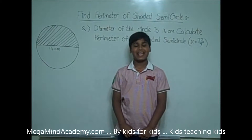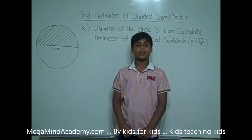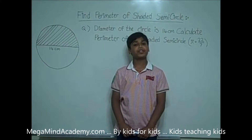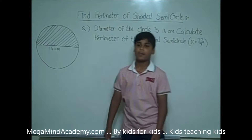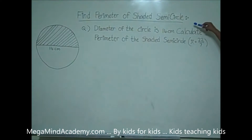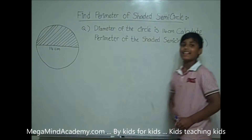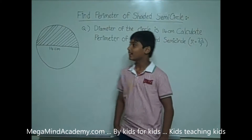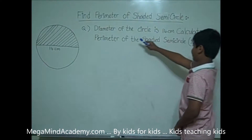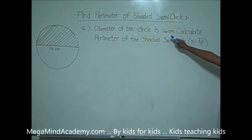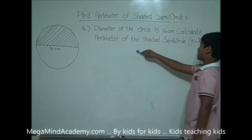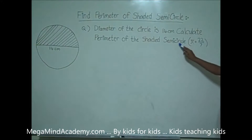Hello! Today we're going to learn about how to find the perimeter of the shaded semicircle. Let's say we have an example like: the diameter of the circle is 14 centimeters. Calculate the perimeter of the shaded semicircle.